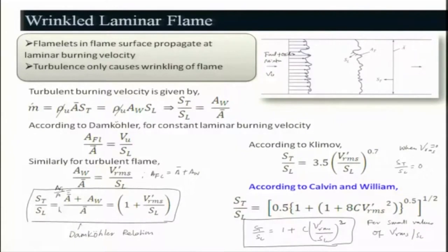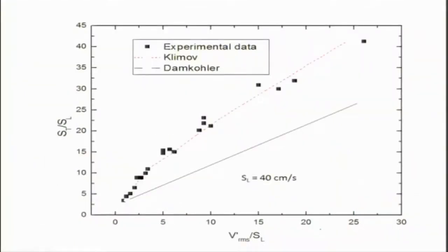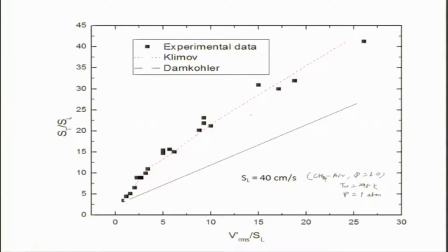Looking at experimental data for S_l = 40 cm/s corresponding to methane-air at φ = 1, T_u = 298 K, P = 1 atm, the Damköhler relationship shows a linear change with v'/S_l. Klimov's data matches well with the experimental data, while the Clavin-Williams model does not match as well — it may be slightly better than Damköhler but is still away from the experimental values.